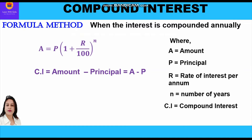There is another direct formula of compound interest: CI = P[(1 + r/100)^n - 1]. Either of these formulas of compound interest we can use depending on what is asked in the question and what is given.